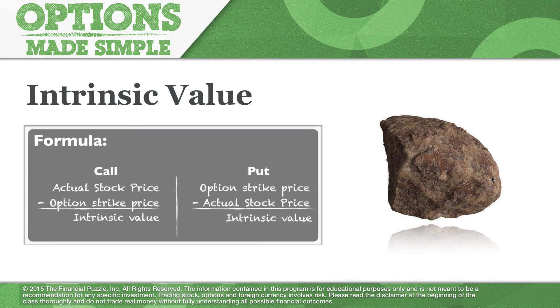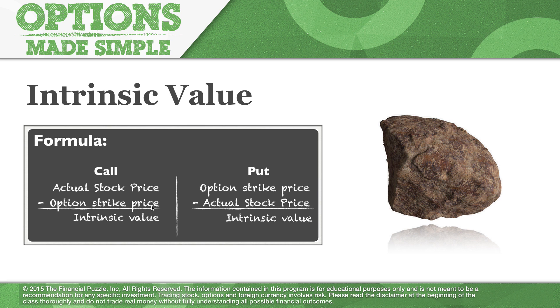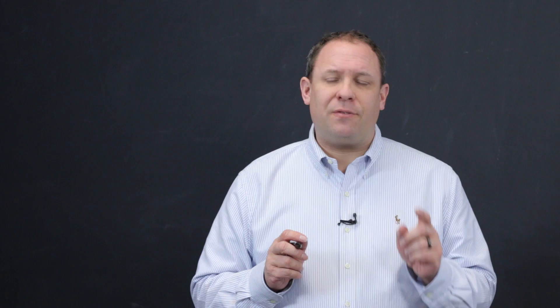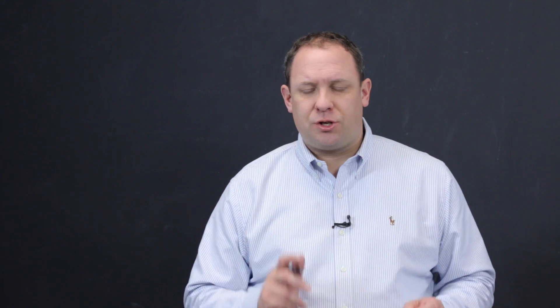The formula for determining intrinsic value is simple — it's just a function of stock and strike price. For a call option, the formula is the actual stock price minus the option strike price, and that difference is your intrinsic value. For a put option, you flip those: it's the option strike price minus the actual stock price. Simply put, it's the difference between strike price and stock price.